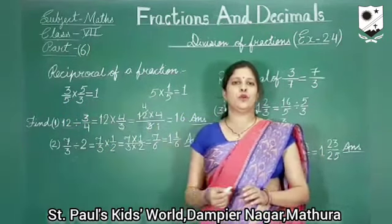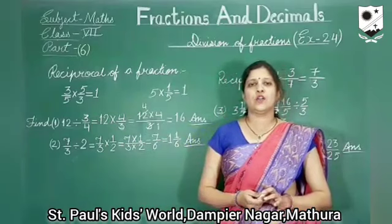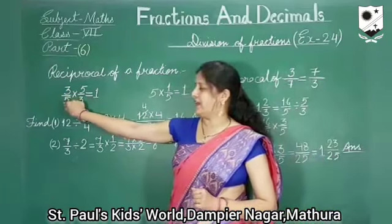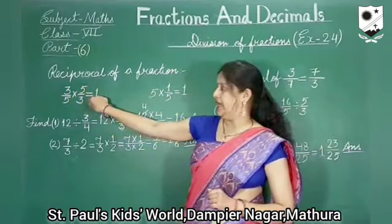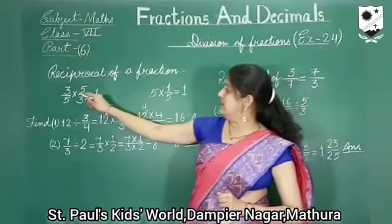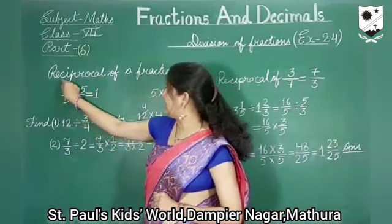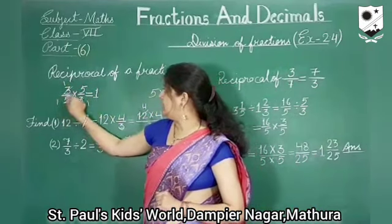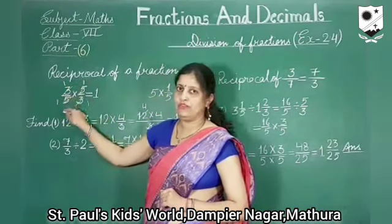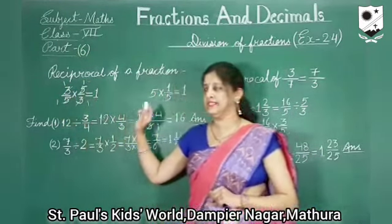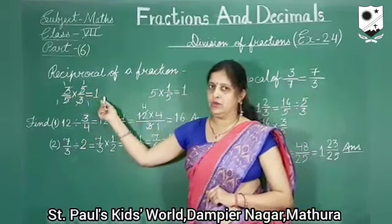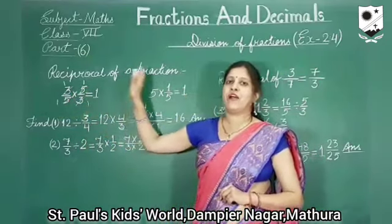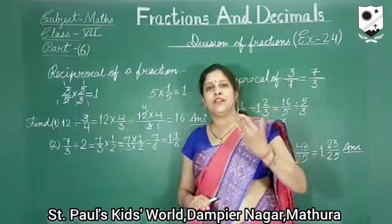Any two non-zero numbers whose product is one are called reciprocal of each other. Like 3 upon 5 multiplied by 5 upon 3 gives one. Why does it give one? We can cancel the numerator and denominators — 3 ones are 3 and 5 ones are 5, so 1 upon 1 gives 1. So 3 upon 5 is reciprocal of 5 upon 3, and 5 upon 3 is reciprocal of 3 upon 5.